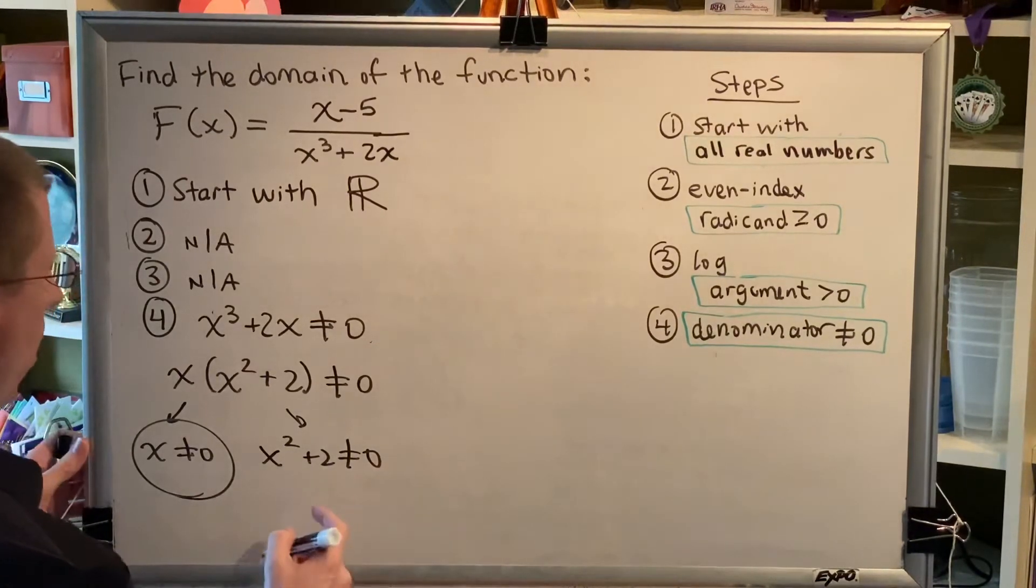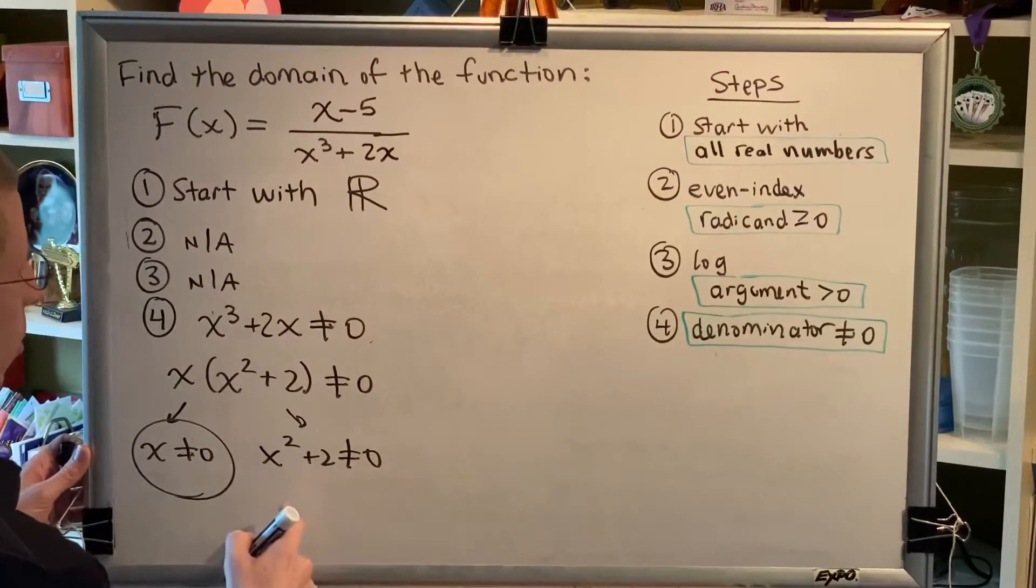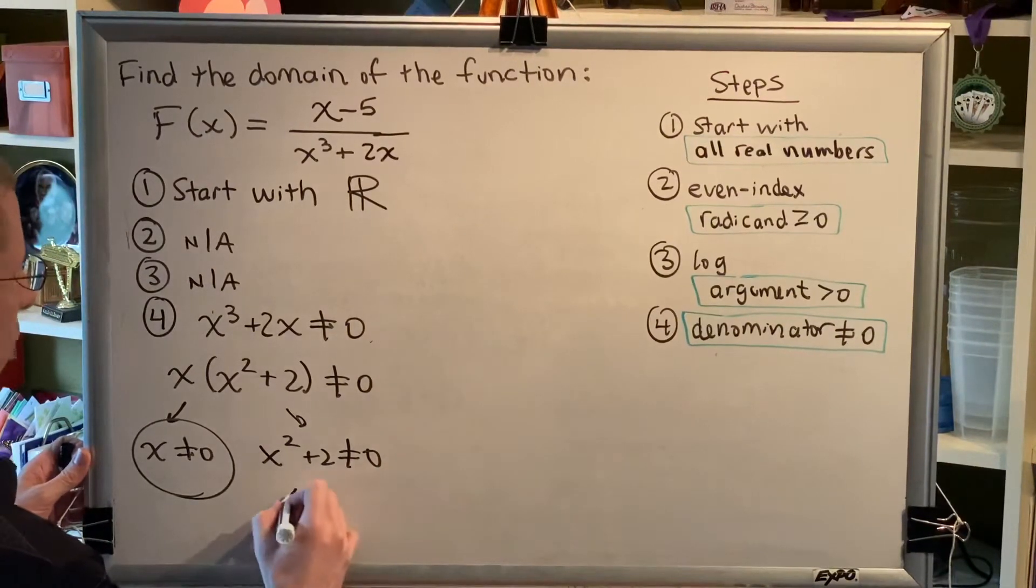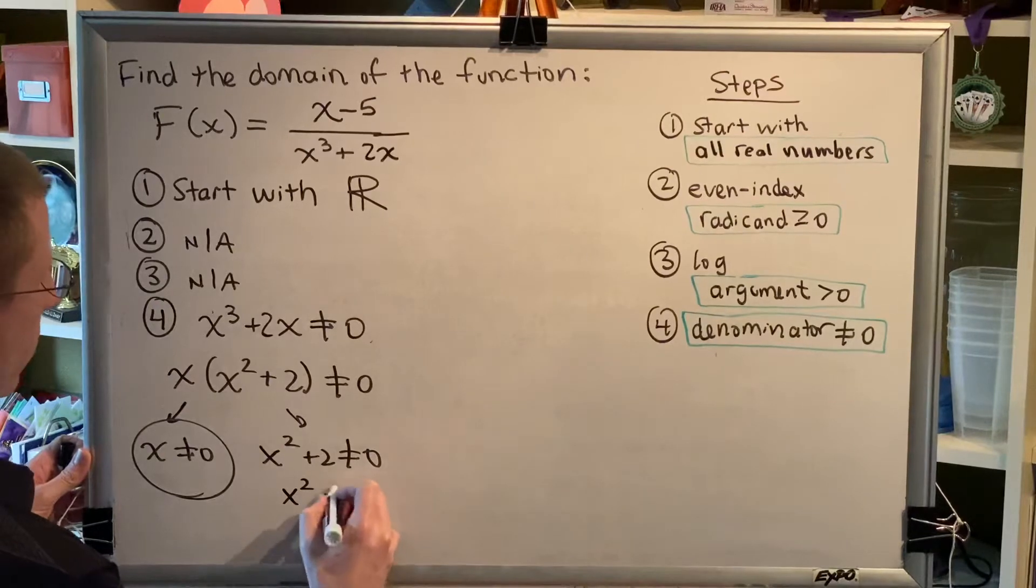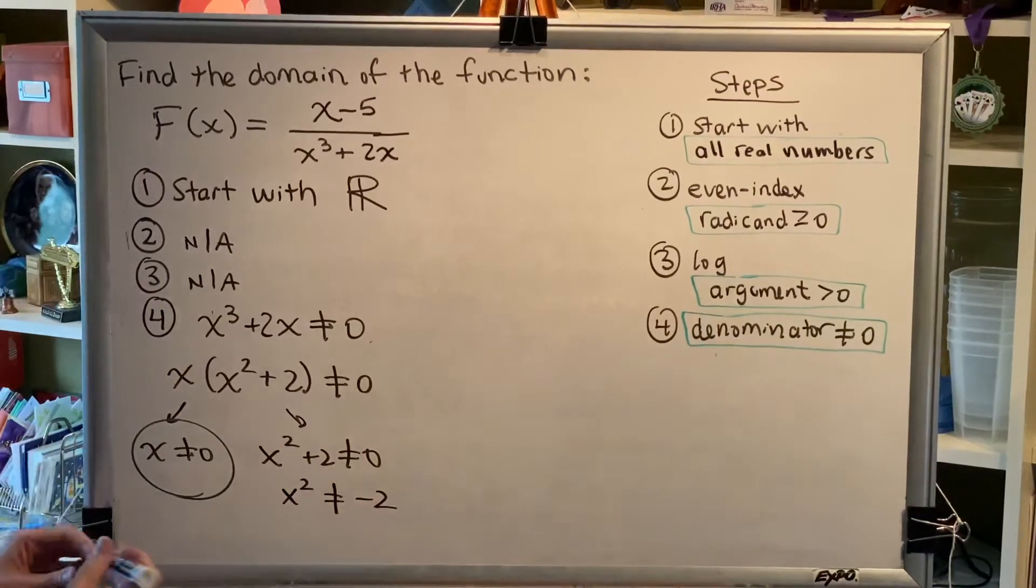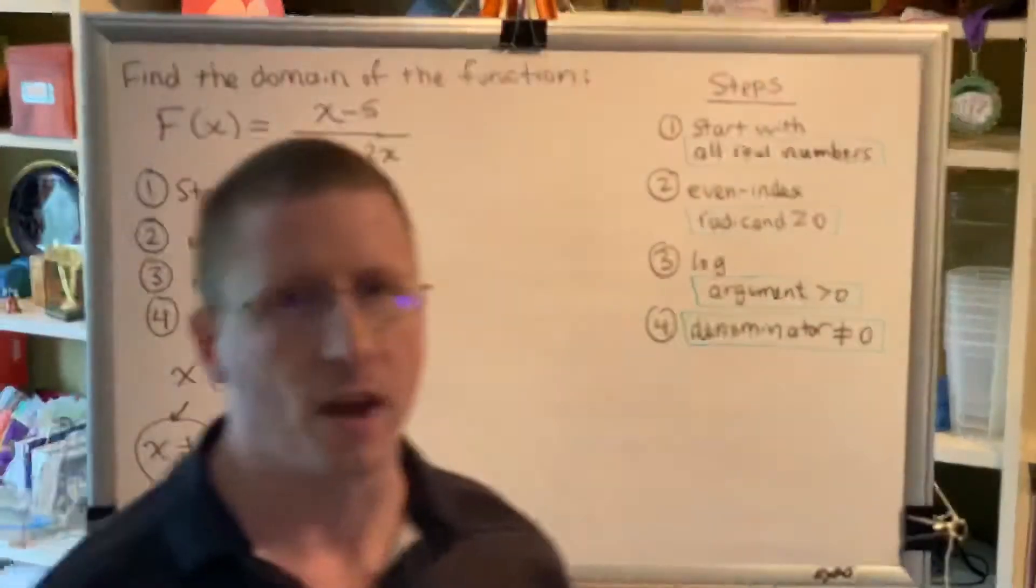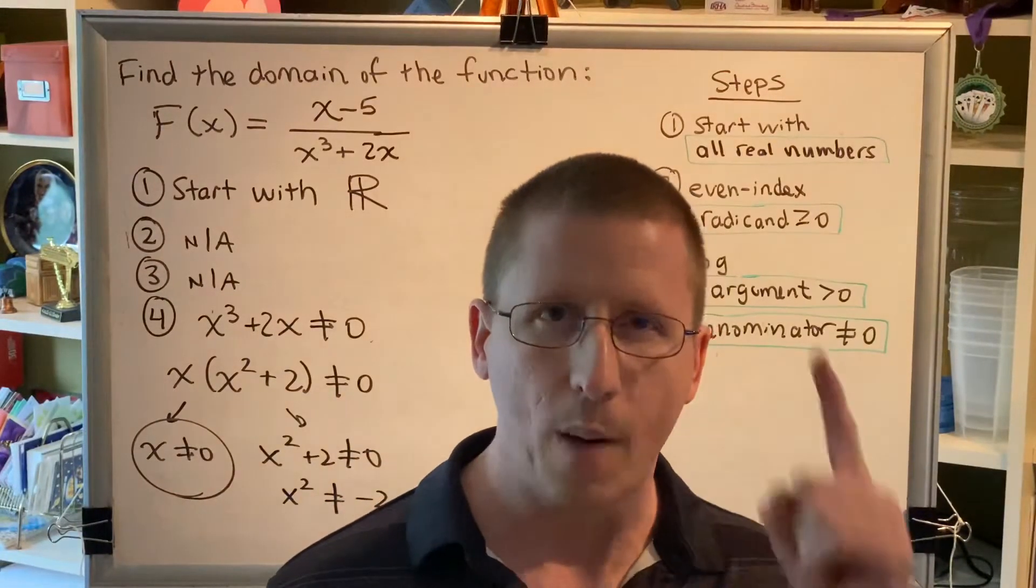And so we continue on and we say x squared plus 2 is not equal to 0. Subtract 2 on both sides, we get x squared is not allowed to be negative 2. Now, I'm going to pause here for just a moment. You could take the square root of both sides, but I actually don't want to. I want to stop and I want to think.